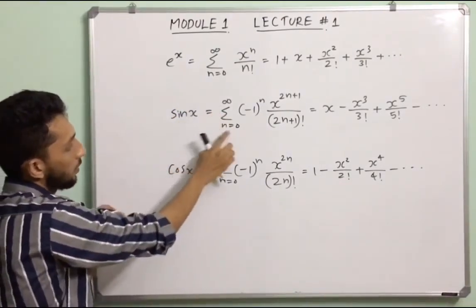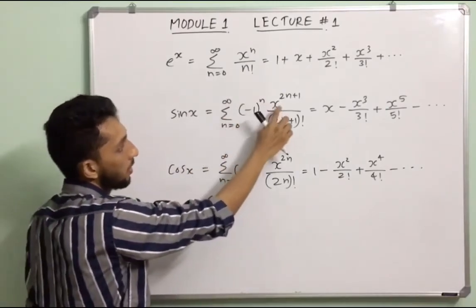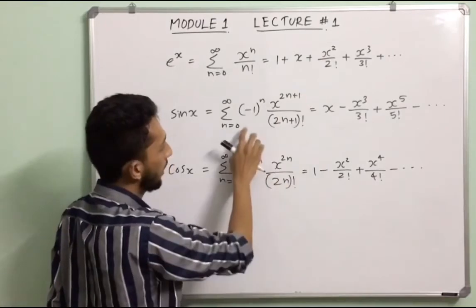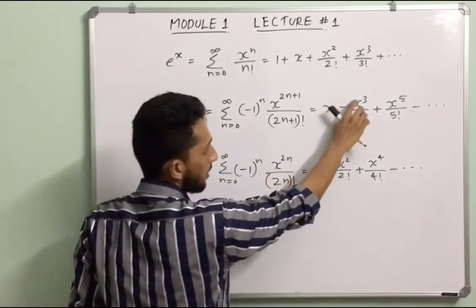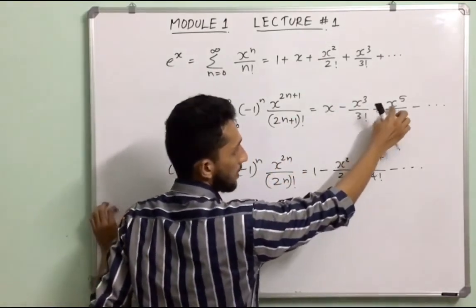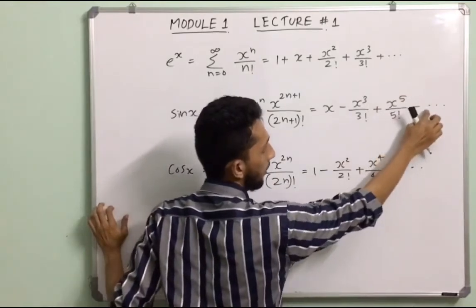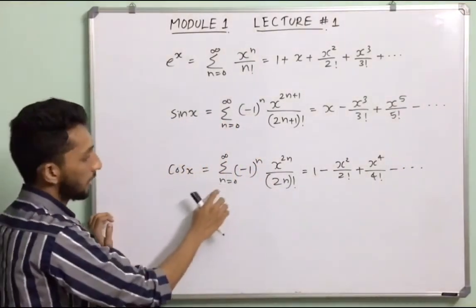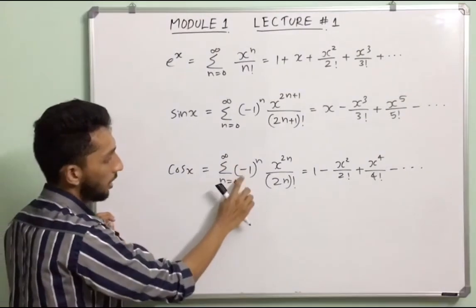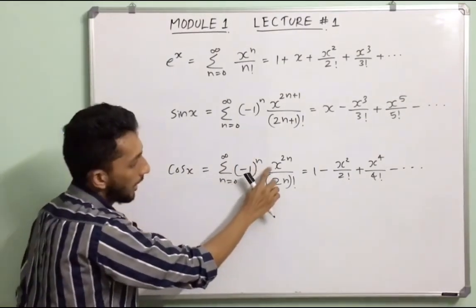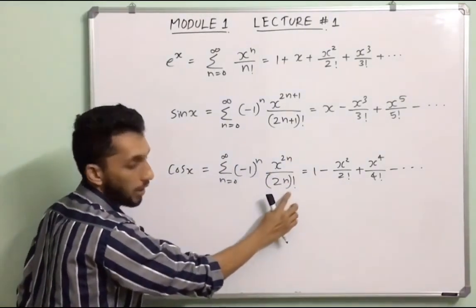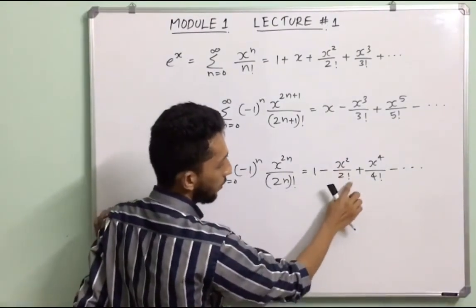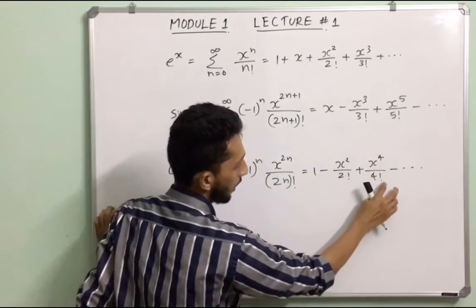Similarly, sin x equals summation n from 0 to infinity of (−1)ⁿ x^(2n+1) / (2n+1)! = x − x³/3! + x⁵/5! − etc. And cos x equals summation n from 0 to infinity of (−1)ⁿ x^(2n) / (2n)! = 1 − x²/2! + x⁴/4! − etc.